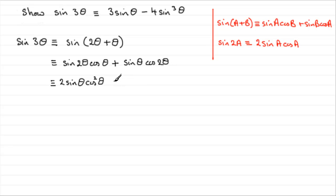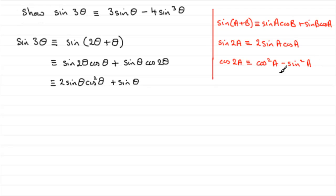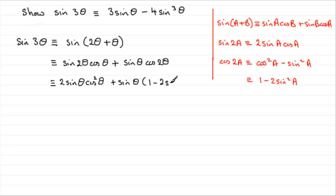Now we come to this term: we have plus sine θ, but we've got cos 2θ. Again, you should know the identity for cosine of 2a. The cos 2a is identical to — well, there are three forms — the one that's most useful here is cos squared a minus sine squared a. Knowing that cos squared a equals 1 minus sine squared a, we can rewrite this as 1 minus 2 sine squared a. So cos 2θ will be 1 minus 2 sine squared θ, and we use that here.